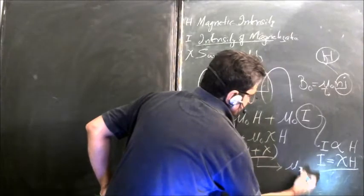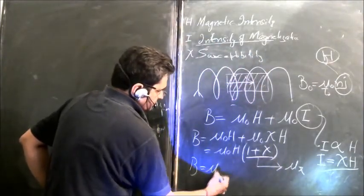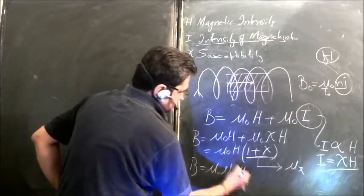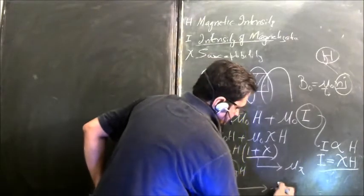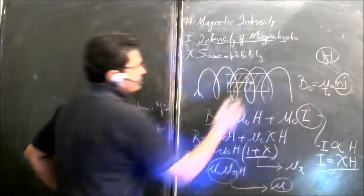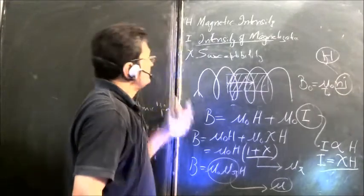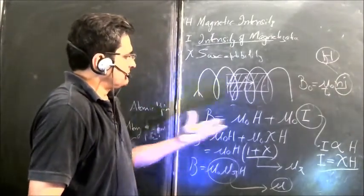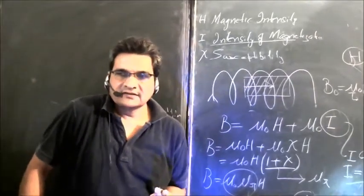So this is the relationship between magnetic field, magnetic intensity, intensity of magnetization, susceptibility, relative permeability, and permeability of the material.